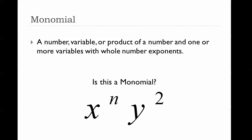Is this a monomial? Hopefully you said no. The reason is this exponent here — the n. It has to have whole number exponents, and this n is a variable. We don't know what n is. It could be a negative five or a fraction, which would not be a whole number.